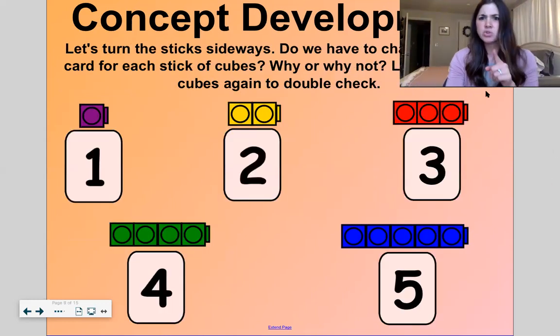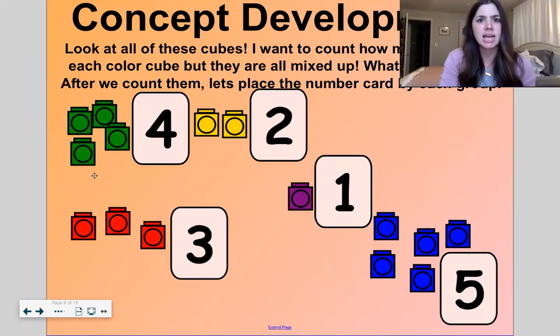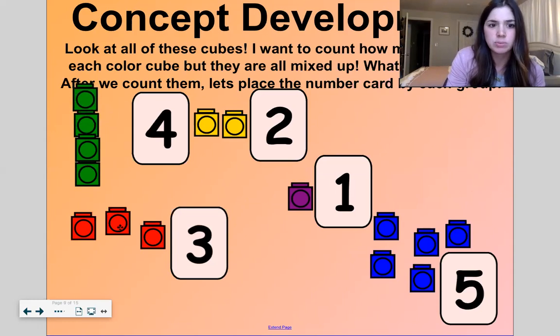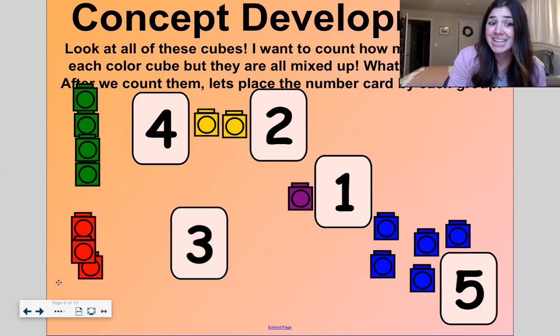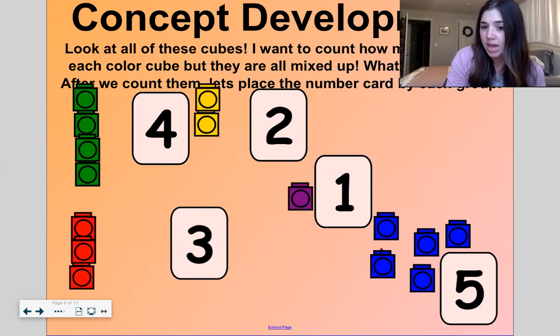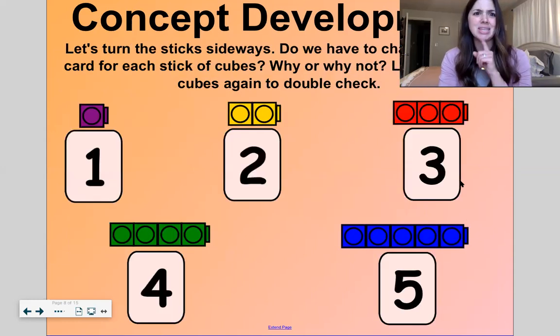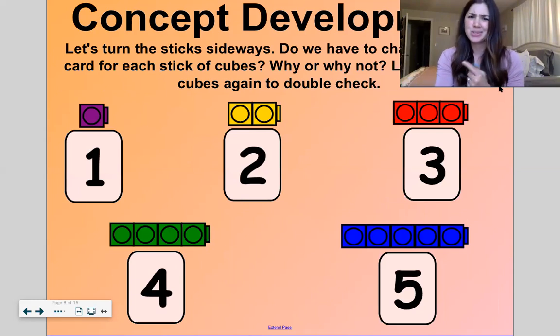All right. Let's do one last game. So now let's turn these sticks sideways. I could have set them up vertical, right? I kind of just grouped them together. But when we use these in our classroom, these click into each other and you are able to make them like big towers. So if I would have done that, these would be vertical, which was our objective for the day, right? We can count vertical and horizontal. So now let's see this one. So if we turn those vertical sticks sideways, do we have to count these again? No, we didn't change the digit card for each stick of cubes, right? But we can count just to be sure. So count with me.